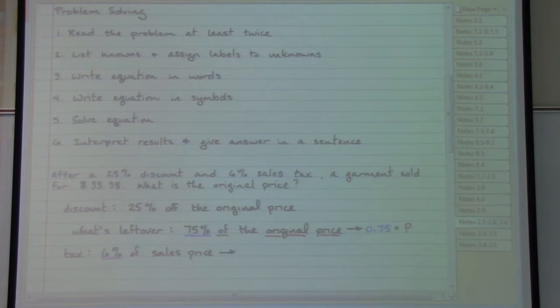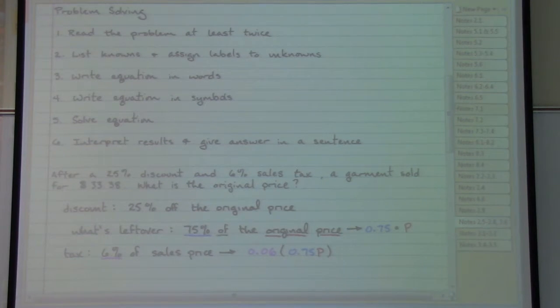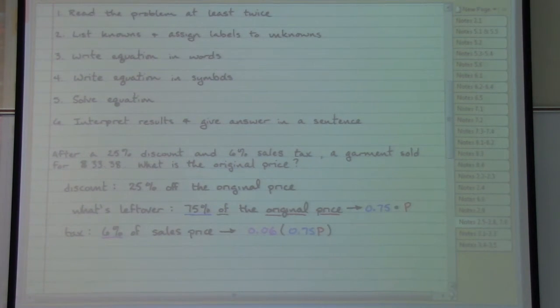Now we can turn that into an expression. 6% as a decimal, 0.06, again the word of relating to multiplication, and the sale price is what we had encountered just a moment ago when we had written in 0.75 P. That was the sale price that we had figured out. Now once those things have been taken care of, the cash register, the cashier would be ready to provide us with the total that we owe.